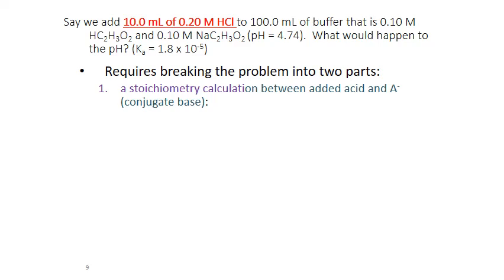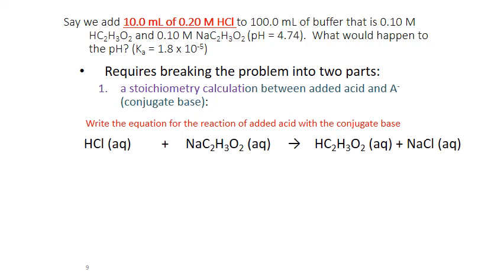Let's look at another example. This time we're going to add 10 milliliters of 0.20 molar hydrochloric acid to our buffer — 100 milliliters of an acetic acid and sodium acetate buffer, 0.1 molar concentration for both the acid and the conjugate base. The initial pH is 4.74, and we want to figure out how the pH changes after reaction with the added acid. We'll do this in two parts again: first the stoichiometry, then the Henderson-Hasselbalch equation. Since we're adding acid, it's going to react with the conjugate base.